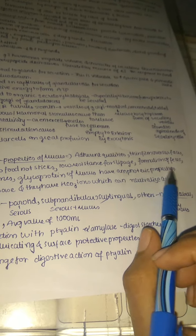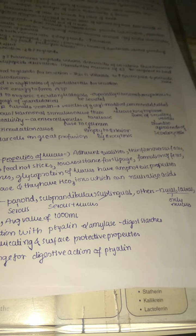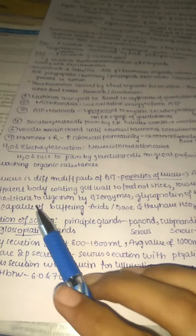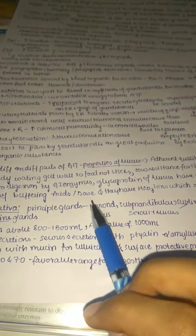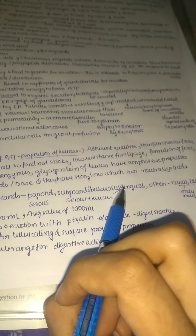The main properties of mucus are: it is adherent, helping to stick and form a thin film as a cover; sufficient body coating at the wall so food does not stick to it; low resistance for slippage, allowing food to flow with ease; it aids in fecal formation; it resists digestion by GI enzymes. Glycoproteins of mucus have amphoteric properties capable of buffering acids or bases, and bicarbonate ions can neutralize acids.